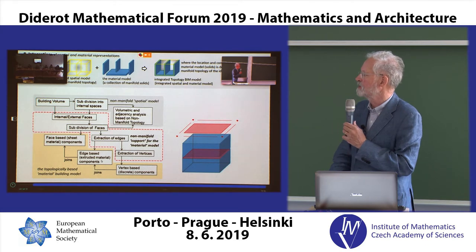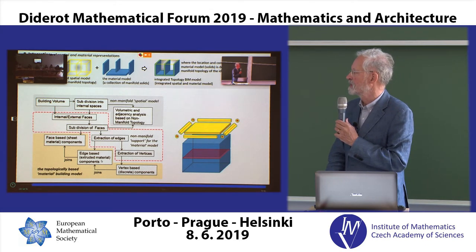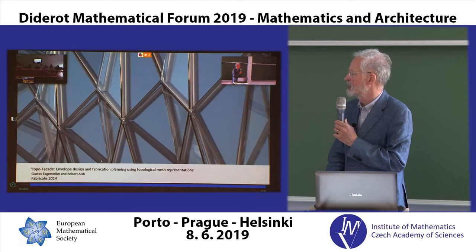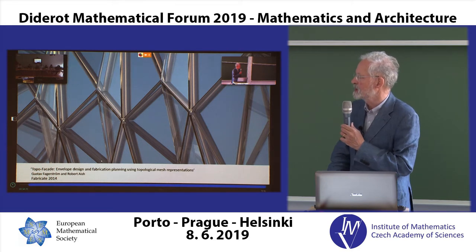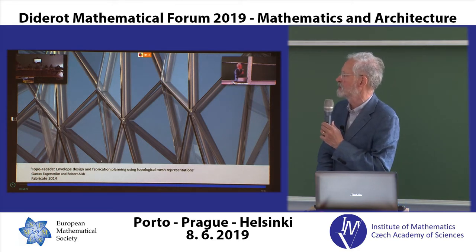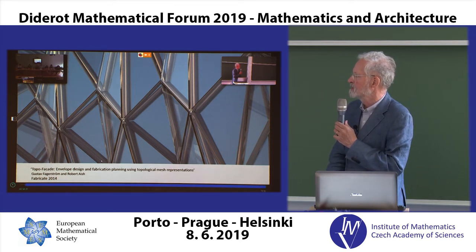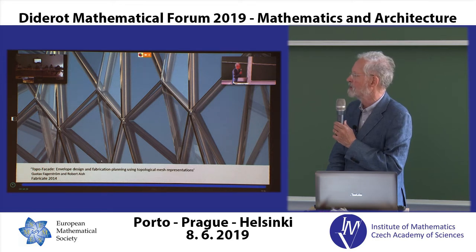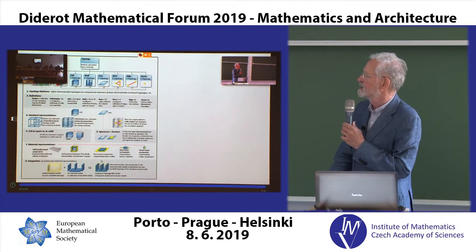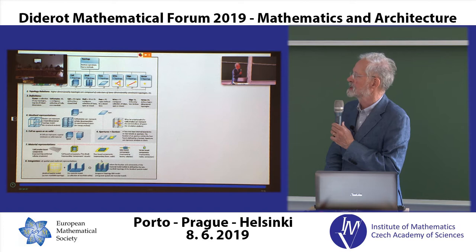We can take this building volume and look at it in terms of different components — edge, vertex, and face-based components. Here's an example from a previous paper, Topo-Facades, which was in Fabricate in 2014, where all the geometry of the skeletal members and how they come together with mitre joints or the bisectors of adjacent faces has all been computed by looking at the topological relationships between the edges and the faces.